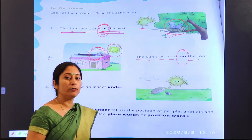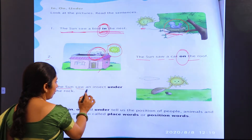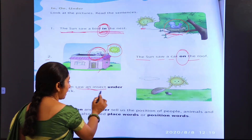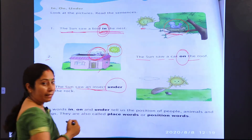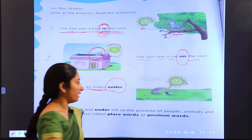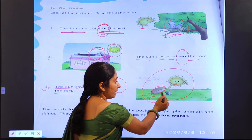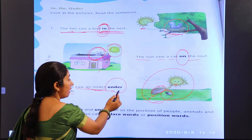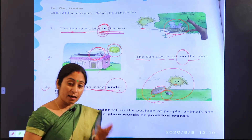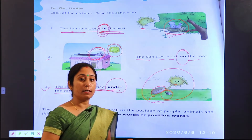Upar ke liye kya use karenge — hum 'on'. Next: the sun saw an insect. Sun ne kya dekha — ek insect. Insect means keeda. Under the rock — means chhatan ke niche hai. Aapko picture mein nazar bhi aa raha hai — yahan sun dekhta hai ki rock ke niche yeh insect hai. Niche means 'under' use hoga. Jahan bhi kisi cheez ke niche ho, toh 'under' aayega. Kisi cheez ke andar ho toh 'in', aur kisi ke upar ho toh 'on'.